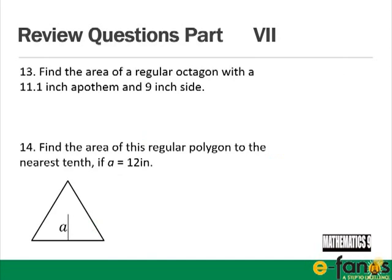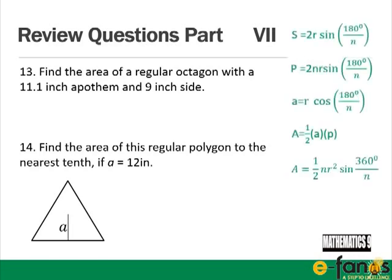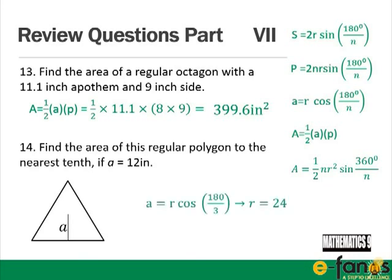Part 7: Find the area of a regular octagon with an 11.1-inch apothem and 9-inch side. Using area = ½AP: ½ × 11.1 × 8 × 9 = 399.6 square inches. For question 14, find the area of a regular polygon where a = 12 inches; finding the radius first using a = r cos(180/3) gives r = 24 inches.